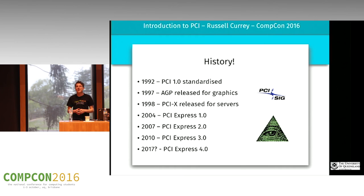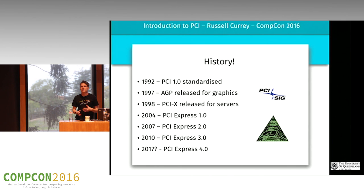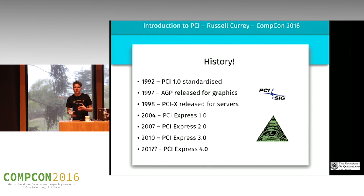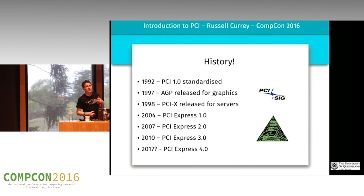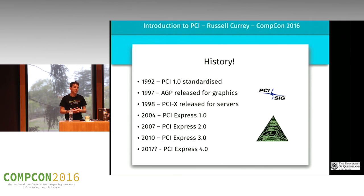In 1997, AGP — Advanced Graphics Port — came out, which was kind of a hot-fixed version of PCI to solve some problems that graphics cards were having. Then in 1998, PCI-X was similar but mostly aimed at the server market — had a couple of improvements but didn't really fix the fundamental problems. Then PCI Express came out in 2004, which was the saving grace. Since then there have been revisions of PCI Express, mostly significant performance improvements, and the next one is expected next year.